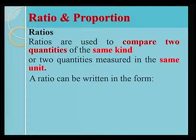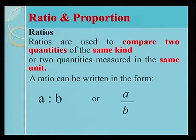A ratio can be written in the form A is to B, or A over B as a fraction.